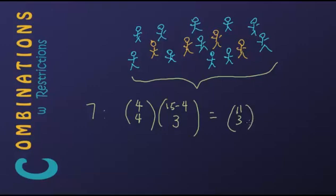So our answer is one times C(11,3). There are C(11,3) ways, which is eleven times ten times nine divided by six — 165 ways that we can choose a group of seven such that all four brothers are in this group.